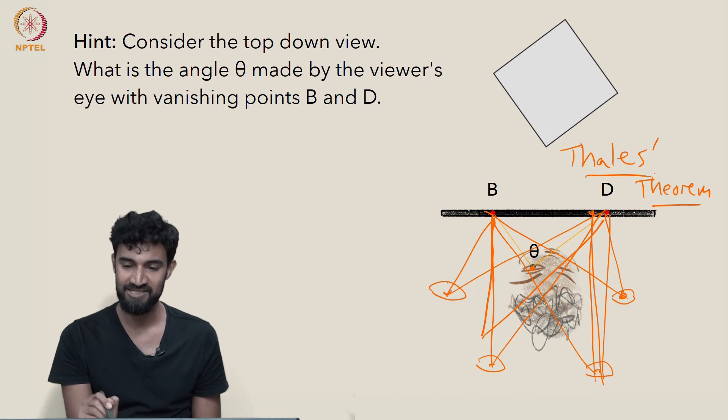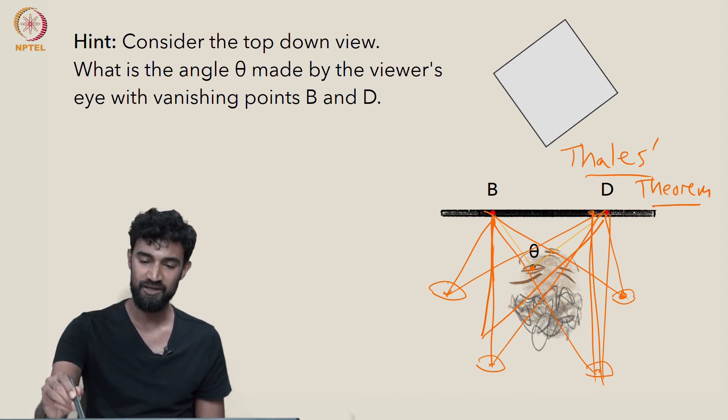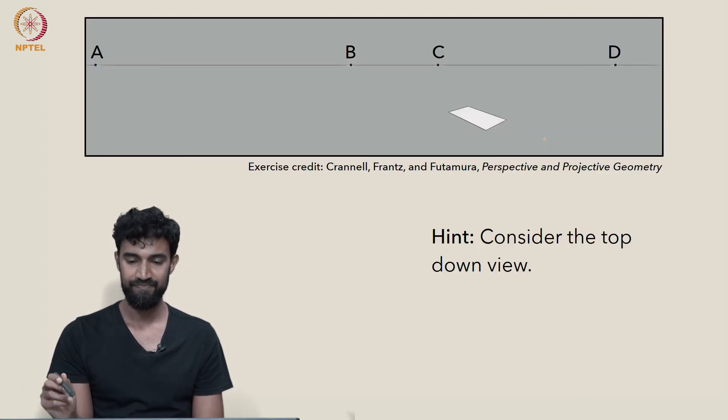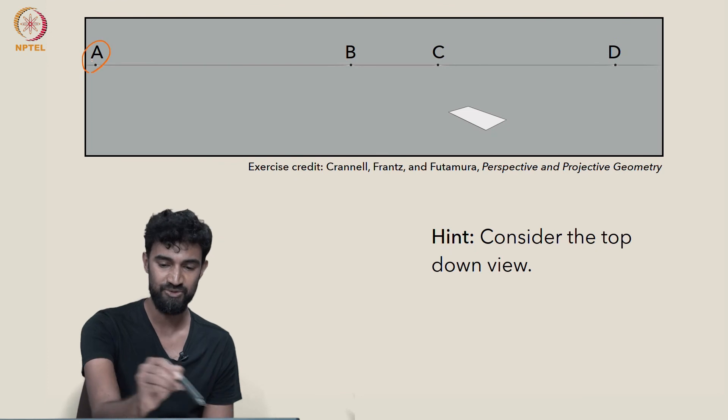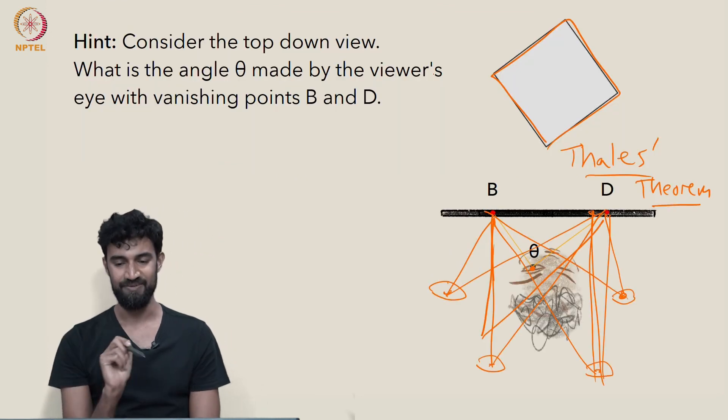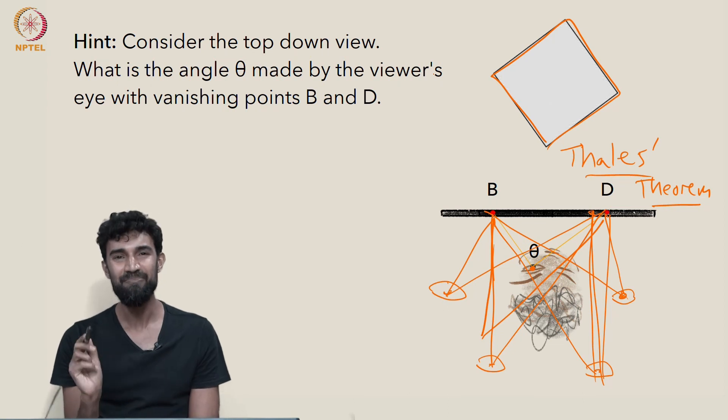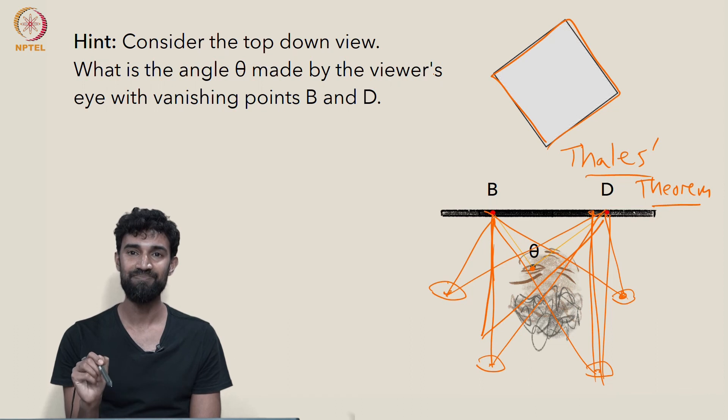But using that, and using the fact that this is a square, there's still some more information you can get from the vanishing points A and C. So I'll leave it there so that you have something to think about. But hopefully you can solve this problem. It is a bit of a challenge, so good luck.